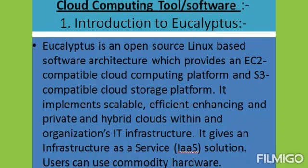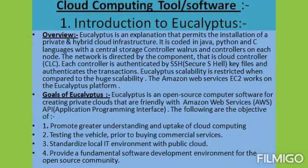Eucalyptus is an acronym for Elastic Utility Computing Architecture for Linking Your Programs to Useful Systems. Eucalyptus software allows pooling of compute, storage, and network resources that can be dynamically scaled up and scaled down as application workload changes. The cloud platform pools together existing virtualized infrastructure to create cloud resources for infrastructure as a service, network as a service, and storage as a service.